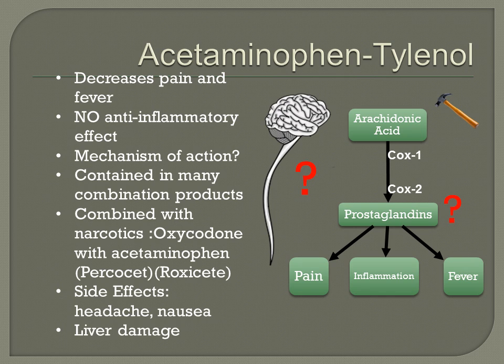Acetaminophen is also combined with narcotics to treat moderate to severe pain. Combination narcotics will end in '-cet', like Percocet or Roxicet — these two medications have oxycodone combined with acetaminophen. Norco and Vicodin contain acetaminophen and the narcotic hydrocodone.